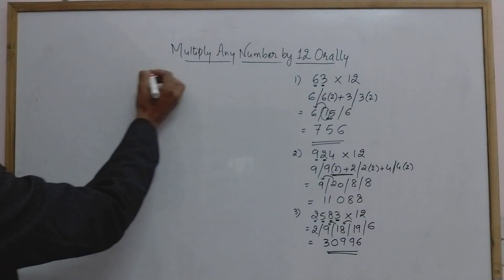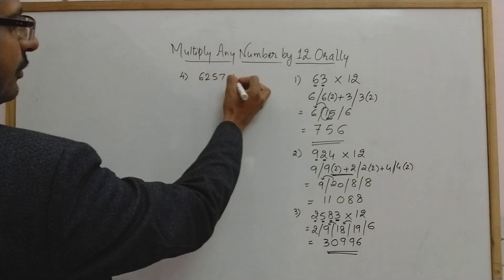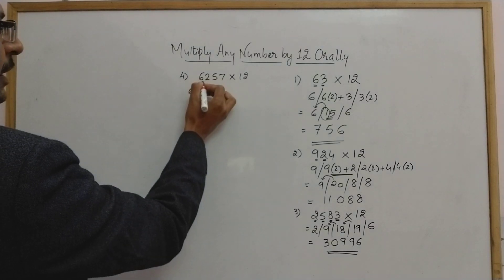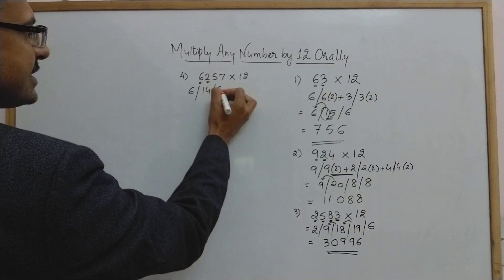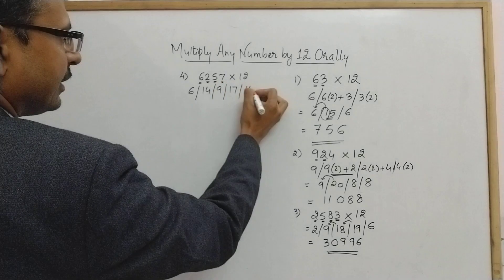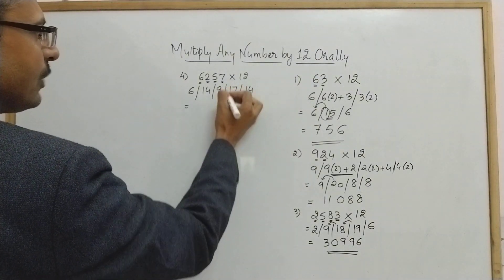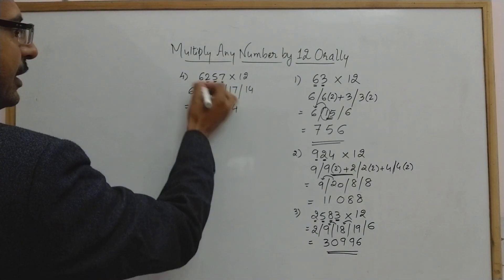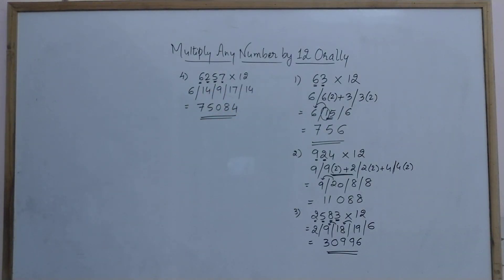Fourth example: 6257 × 12. Start with 6 retained. Double of 6 is 12, plus 2 = 14. Double of 2 is 4, plus 5 = 9. Double of 5 is 10, plus 7 = 17. Double of 7 is 14. Writing the answer: 4, then 17 + 1 = 18 gives 8; 9 + 1 = 10 gives 0; 14 + 1 = 15 gives 5; and 6 becomes 7. So 75084 is the required product.